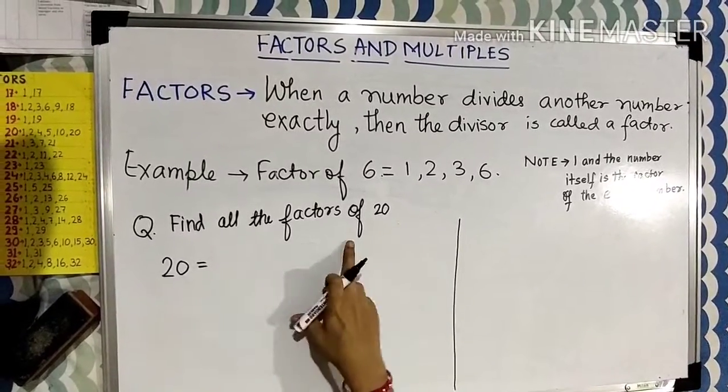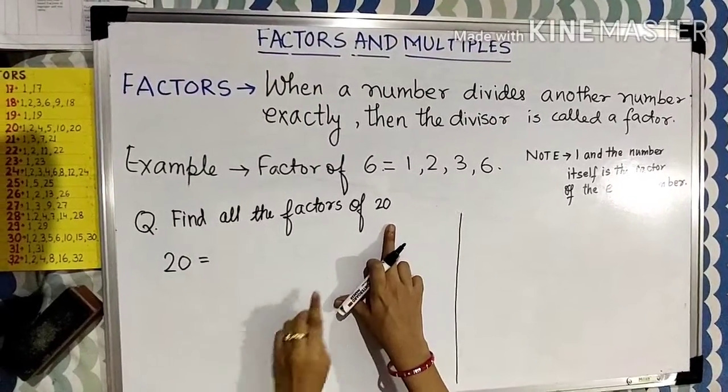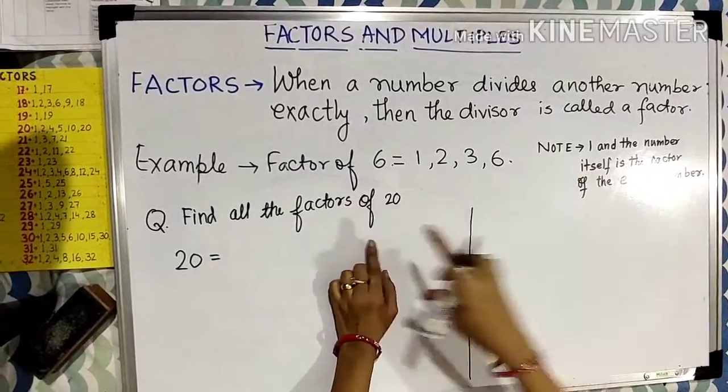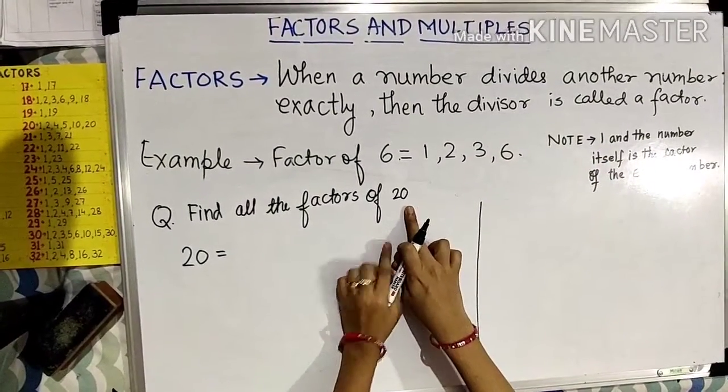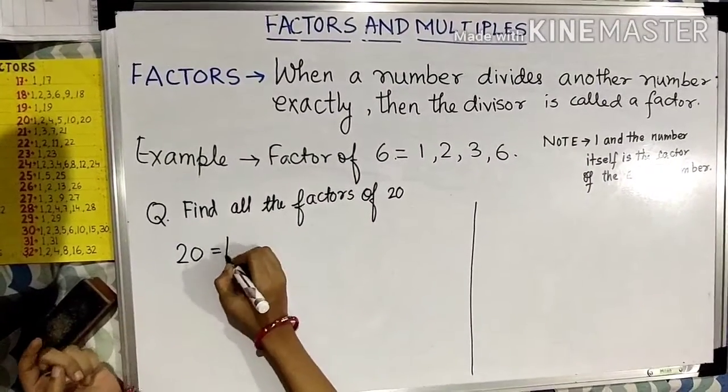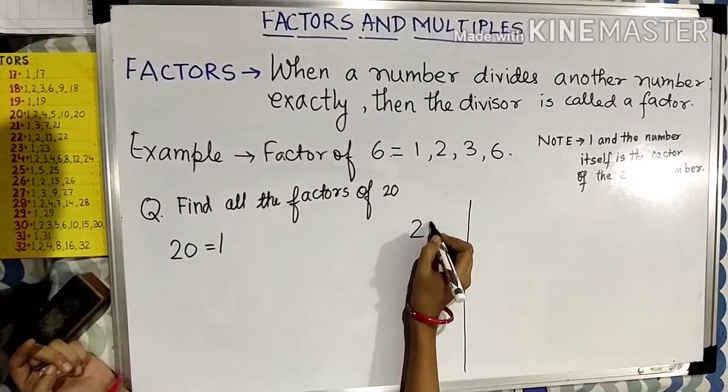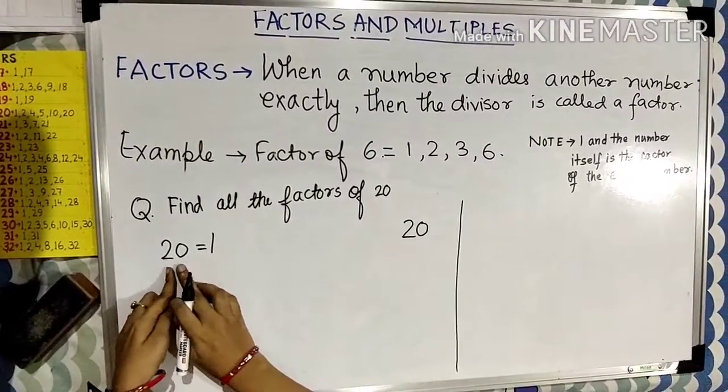Let us find all the factors of number 20. As we know that 1 and the number itself is the factor of every number. So it means that 1 and 20 is the factor of number 20.